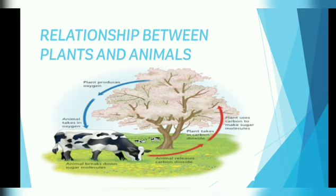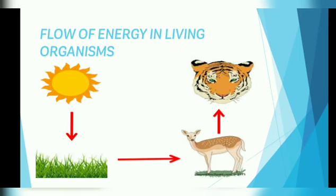This way, plants and animals depend on each other. Flow of energy in living organisms: the sun is the main source of energy on Earth. Plants use the sunlight along with water and carbon dioxide to make food.